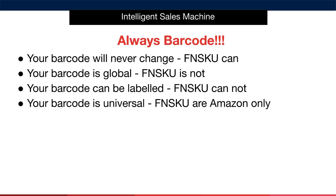Many people ask whether they should have the barcode on the product or the FNSKU, as there is a lot of conflicting information out there. Here are the key reasons for using the barcode versus the FNSKU: The barcode will never change; the FNSKU can. The barcode is global whereas the FNSKU is not. The barcode can be relabelled by Amazon if needed, whereas the FNSKU cannot. Barcodes are universal across all sales channels, whereas FNSKUs are only for Amazon. It's quite clear and very simple: barcode your items. Do not use the FNSKU.